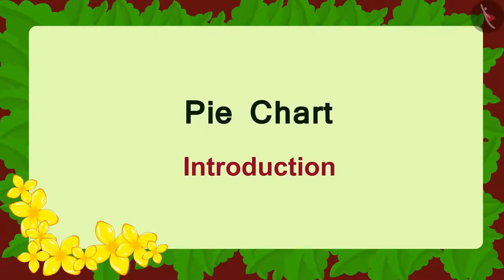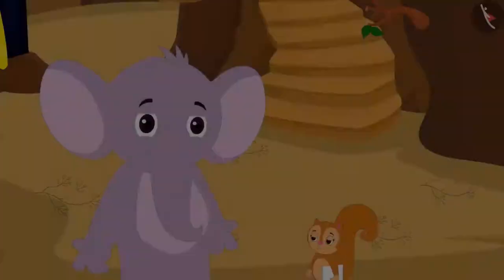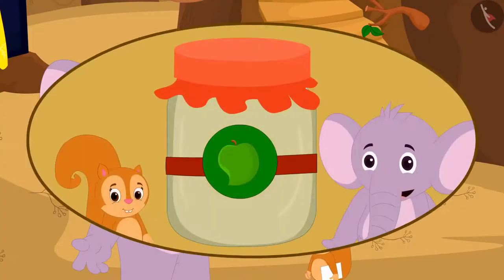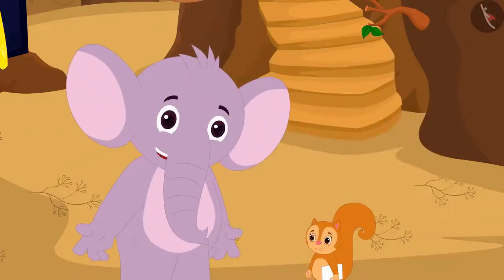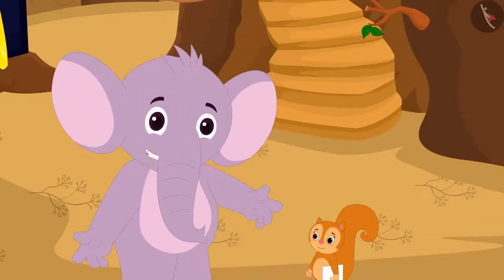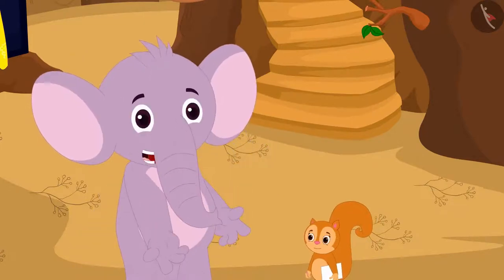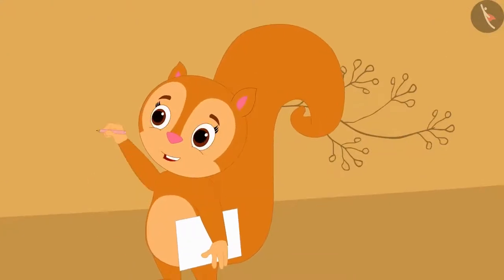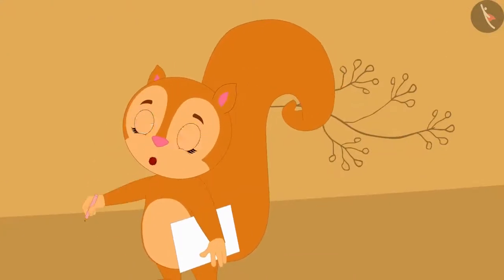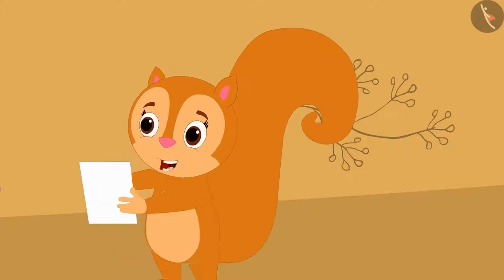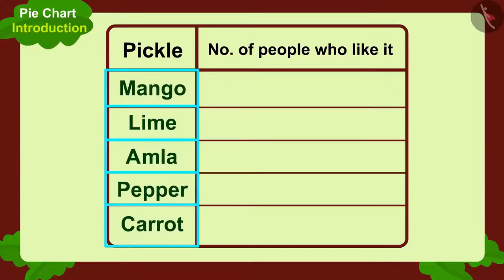In this video, we will learn about the pie chart. Chanda and Appu want to start a pickle making business together. Chanda says, 'I think we should first find out which pickles people like.' Appu agrees, and they decide to ask the villagers. Appu says, 'I will write down the names of some pickles on a paper, then we will write the number of people who like that pickle in this table.'